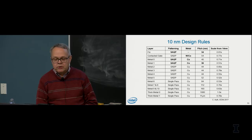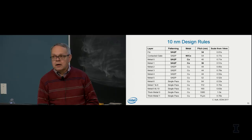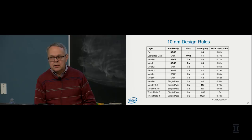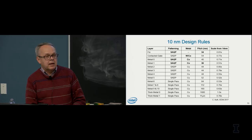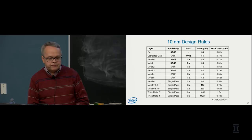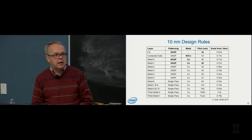Most metal layers use copper for its low resistance and good electromigration reliability. However, the three lowest layers — metal zero, metal one, and the contacted gate — use cobalt and tungsten for the first time, because they have much better electromigration reliability. These very tiny wires have small cross-sectional areas and carry high current density, which would cause electromigration failures with copper, but cobalt and tungsten are much more resistant and better suited for those fine-pitch layers.